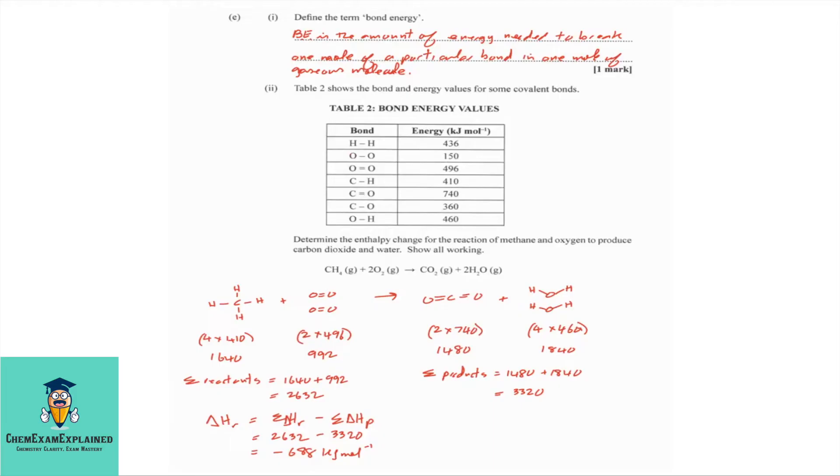Part 2. Table 2 shows the bond and energy values for some covalent bonds. Determine the enthalpy change for the reaction of methane and oxygen to produce carbon dioxide and water. You are given the equation, methane plus oxygen produces carbon dioxide and water. How are we going to determine the enthalpy change for this reaction? The first thing we'll do is we'll draw out the bonds.